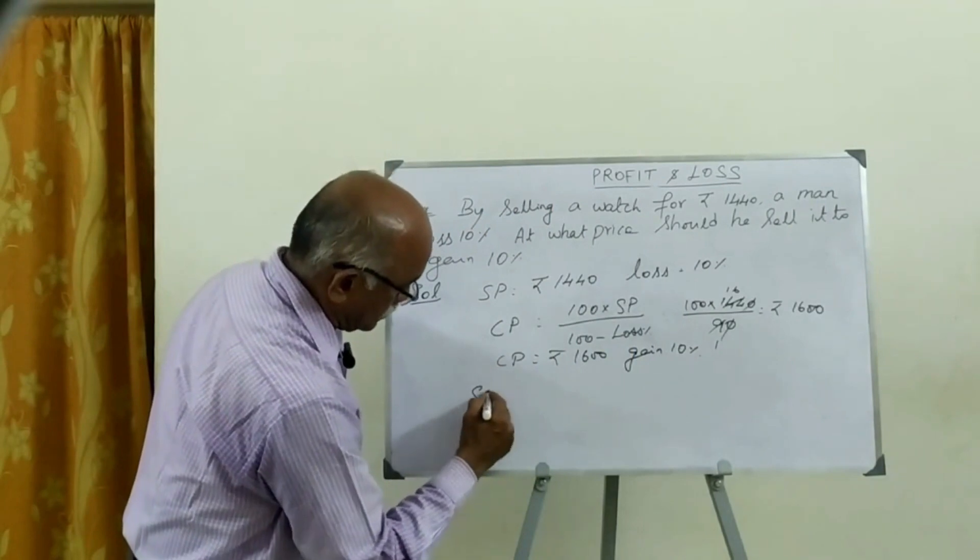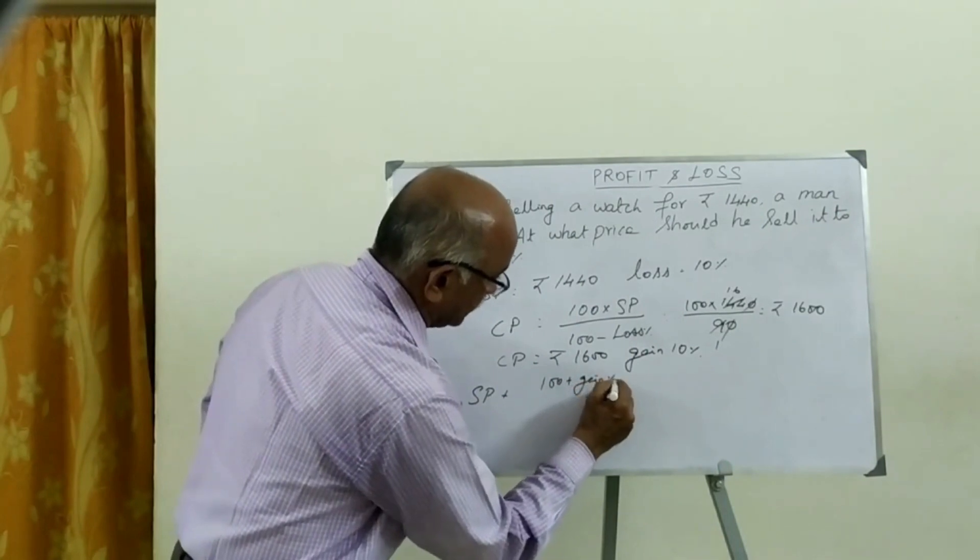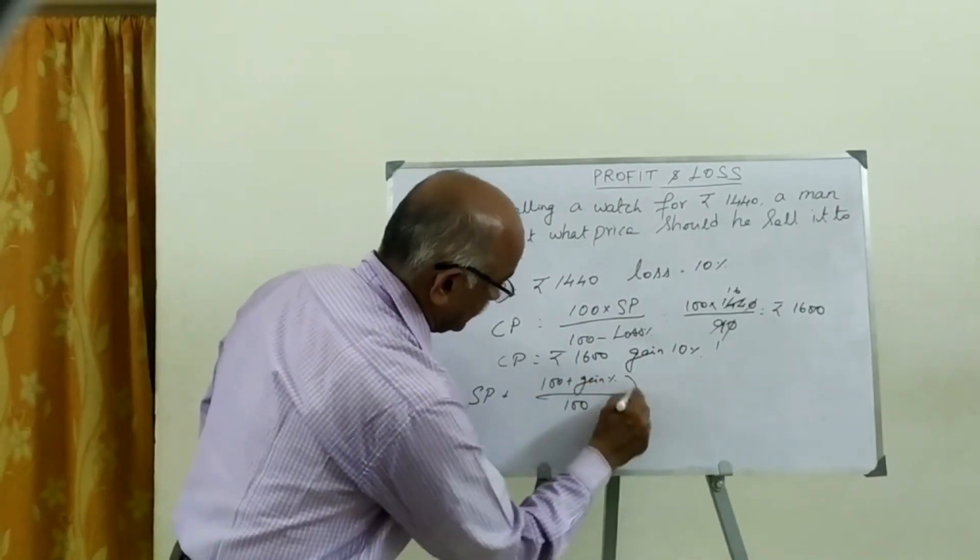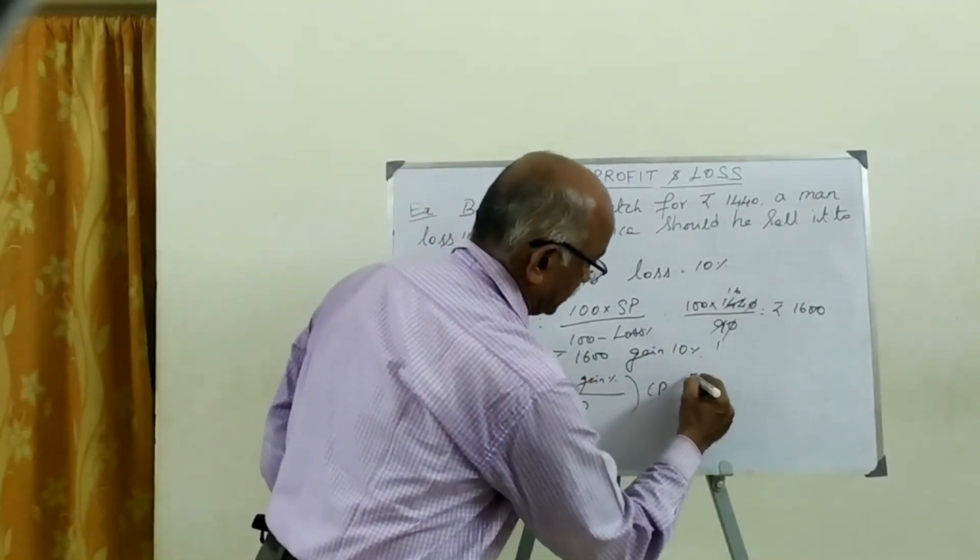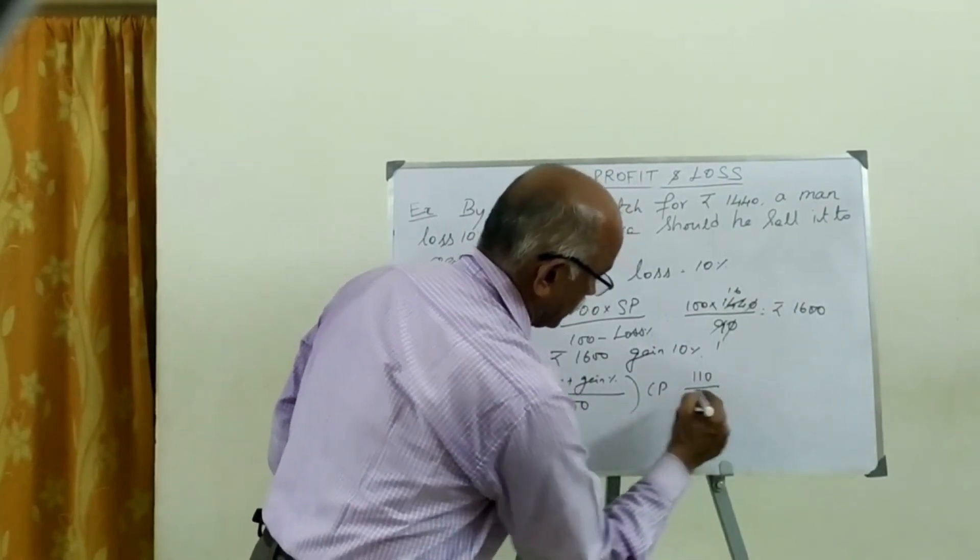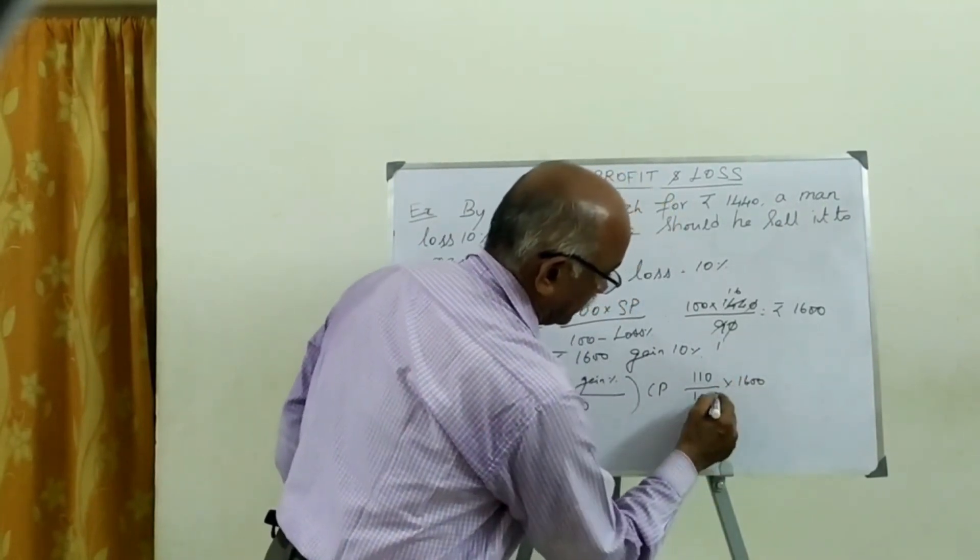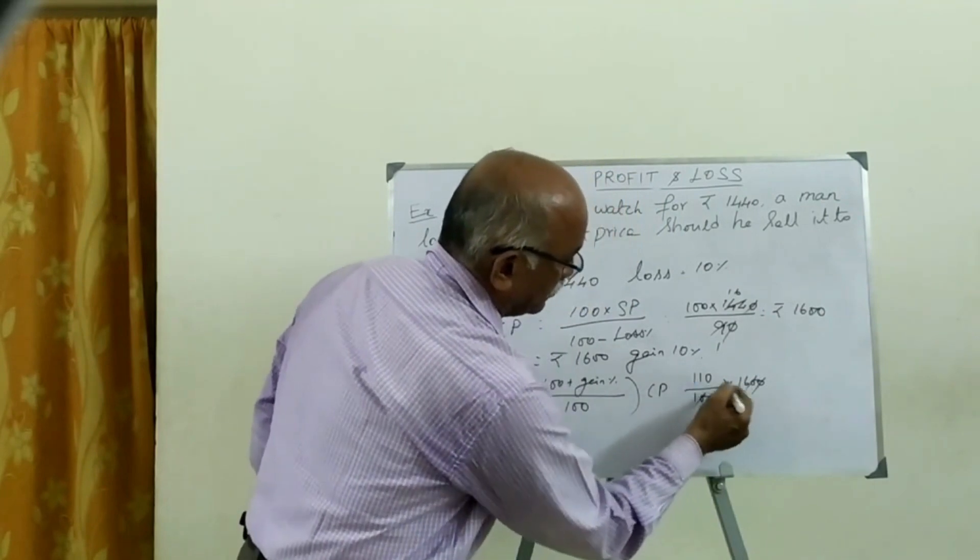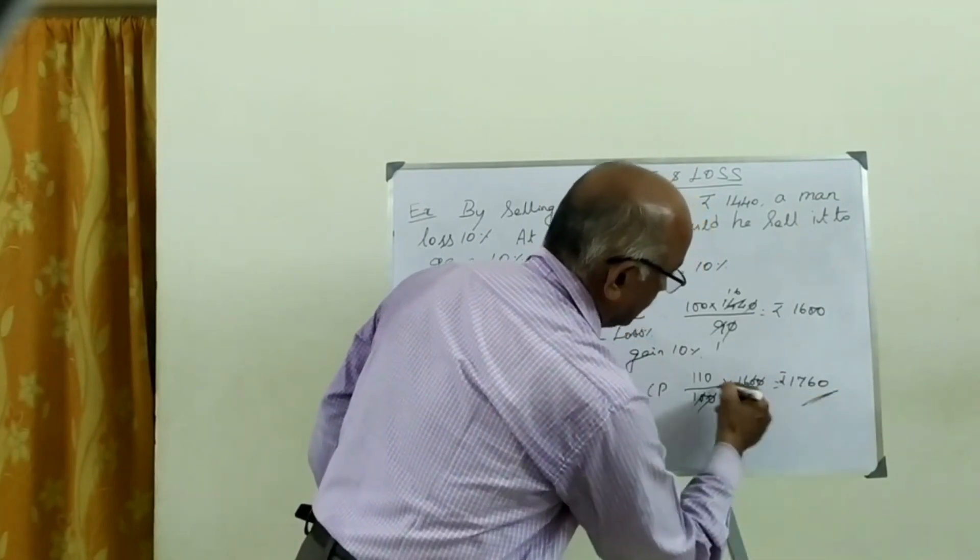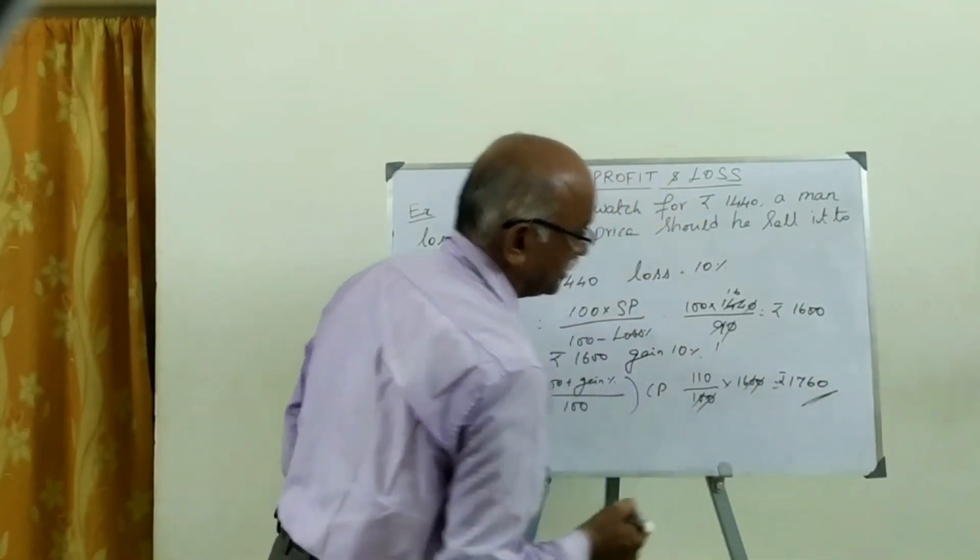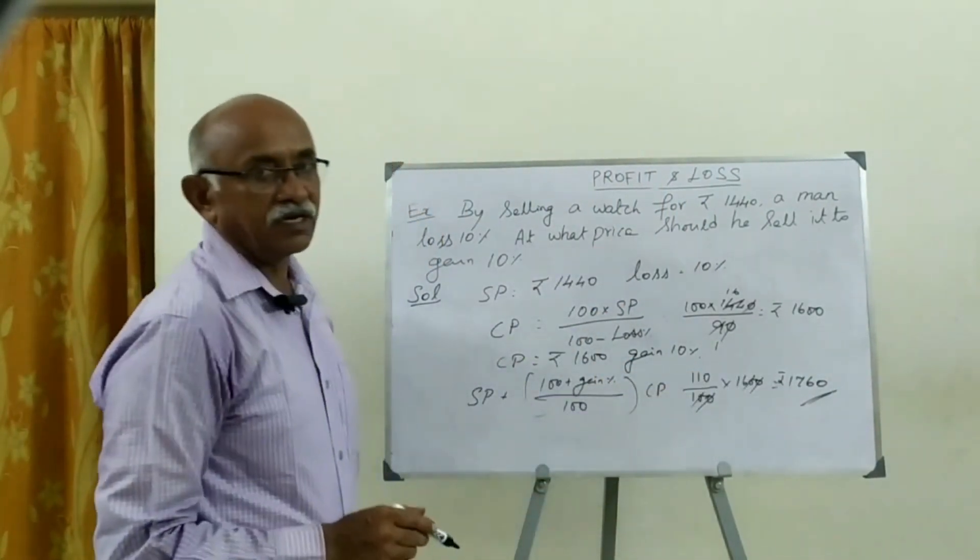100 plus gain percentage divided by 100 into CP. This is the formula. 100 plus gain is 10%. 110 by 100 into CP is 1600. If you multiply this, 1600 into 1.10. If you sell 10% in profit, 100 plus gain percentage divided by 100.